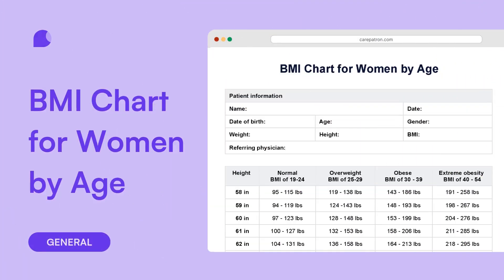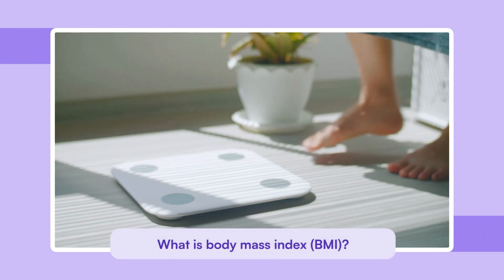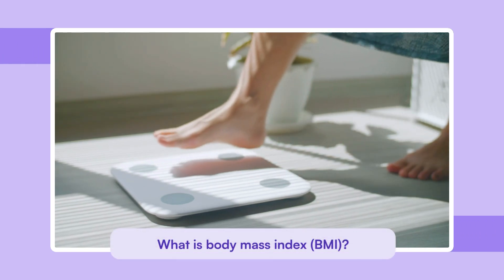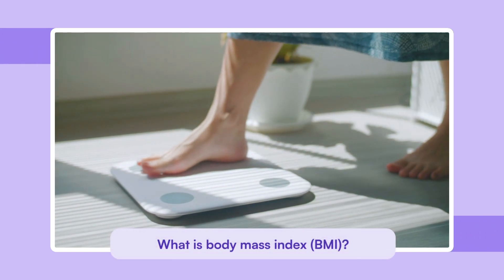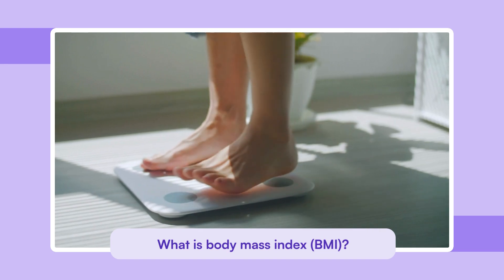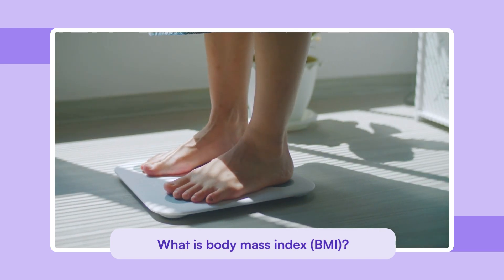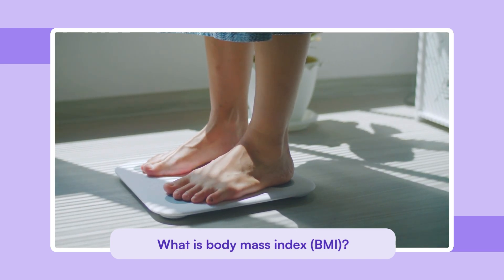Body Mass Index, or BMI, is a numerical measurement used to estimate body fat based on a person's weight and height. It's calculated by dividing weight in kilograms by height in meters squared.